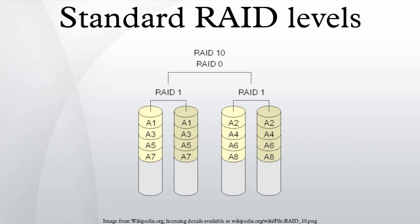RAID 5 comprises block-level striping with distributed parity. Unlike in RAID 4, parity information is distributed among the drives. It requires that all drives but one be present to operate. Upon failure of a single drive, subsequent reads can be calculated from the distributed parity such that no data is lost. RAID 5 requires at least three disks.